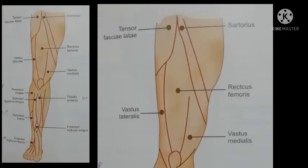Motor points of the lower limb — first we will study the muscles of the front of thigh. The inactive electrode (pad electrode) should be placed on the femoral triangle, because the femoral nerve passes from there. The pan electrode should be placed on the muscle that is to be stimulated.